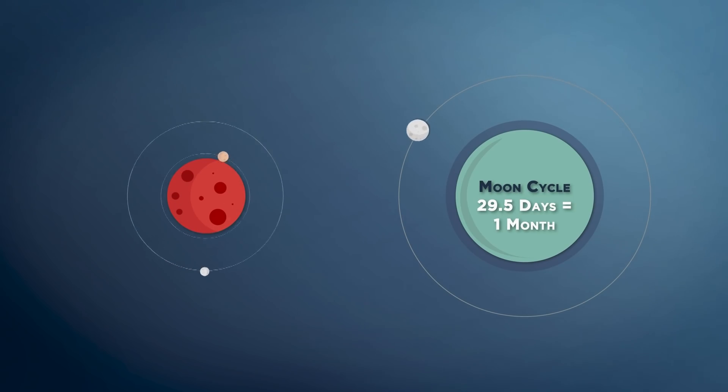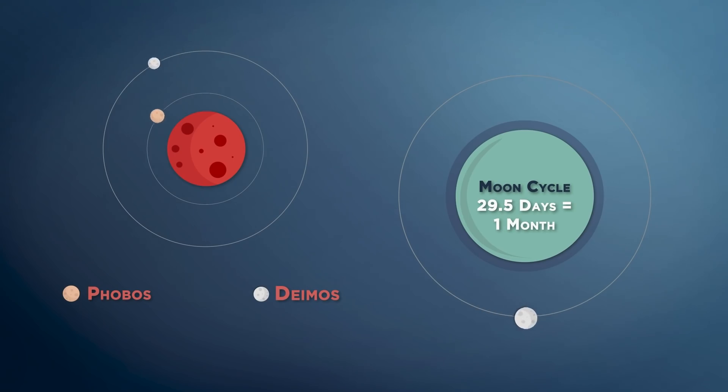Mars actually has two moons, Phobos and Deimos, and these moons are almost nothing like ours. Phobos, for instance, orbits just 3,700 miles above the surface of Mars, and whips around it three times every single day. And Deimos, on the other hand, while it is more distant, it still only takes 30 hours.